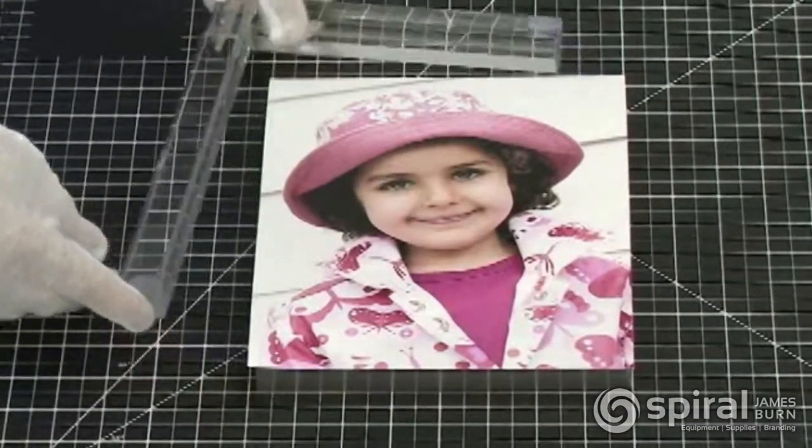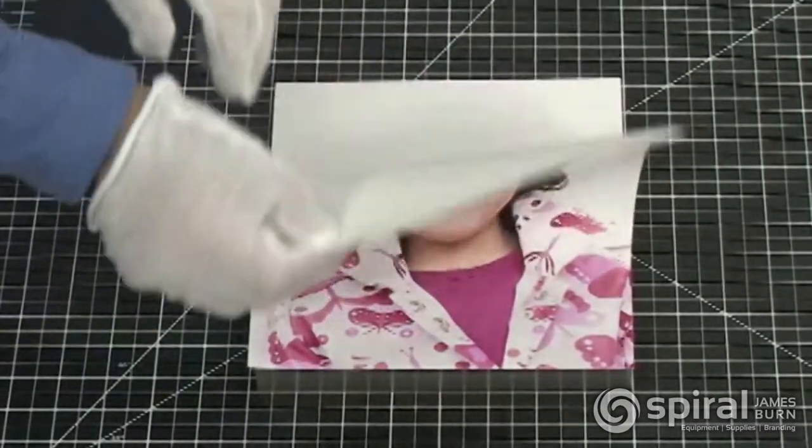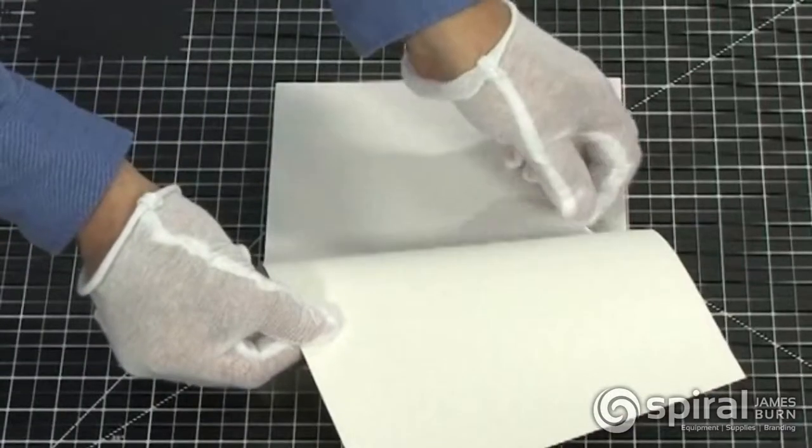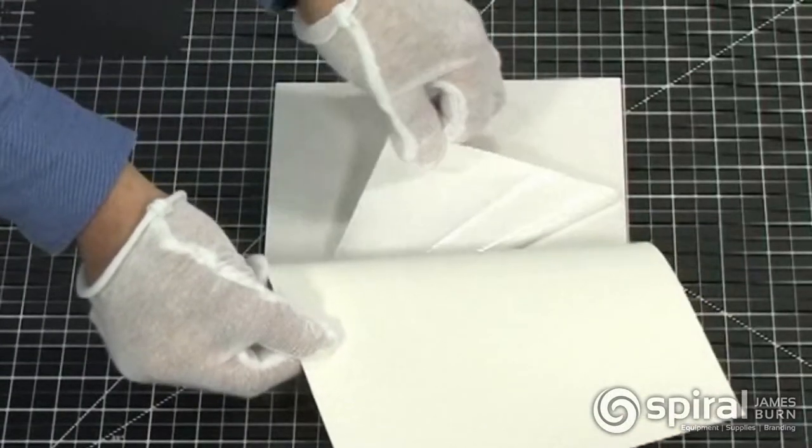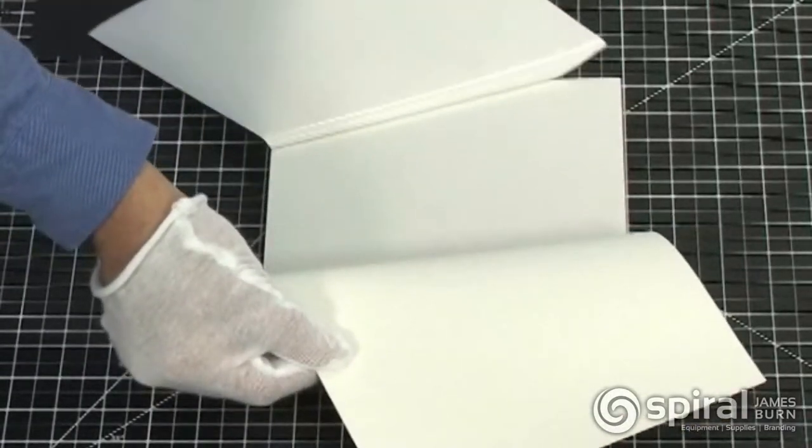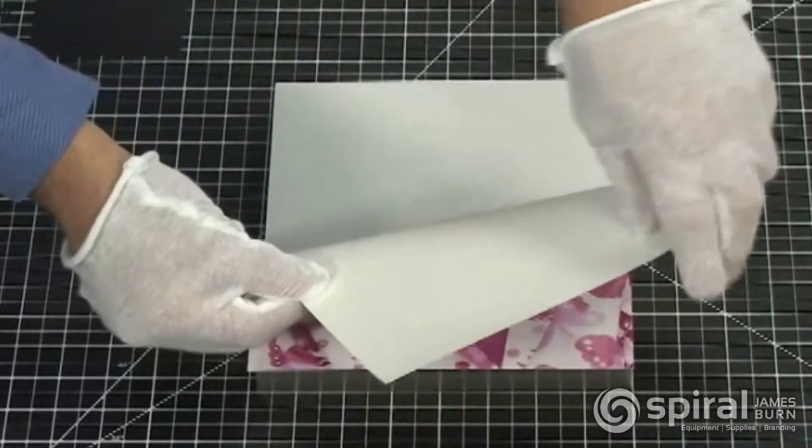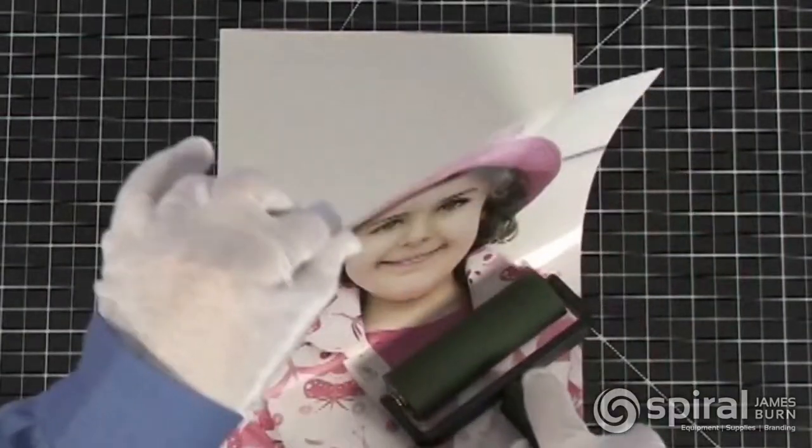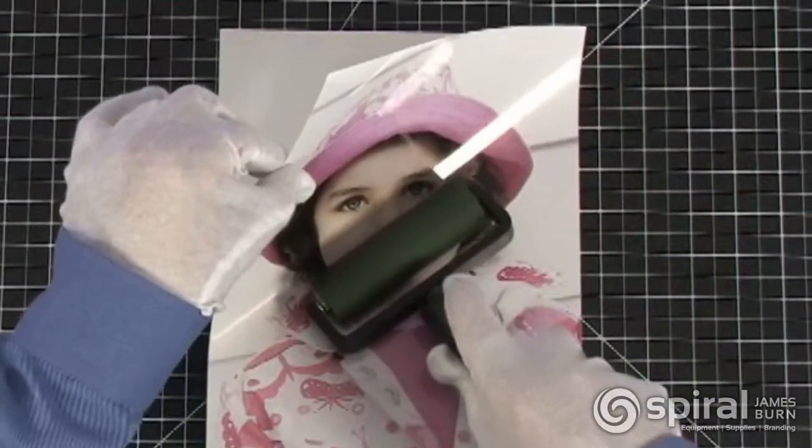Remove the jig from the mat. Lift the attached print with one hand and remove the rest of the liner with your other hand. Hold the edge of the print and lightly roll the photo onto the frame. Roll from the stuck corner outward to avoid trapping air bubbles.